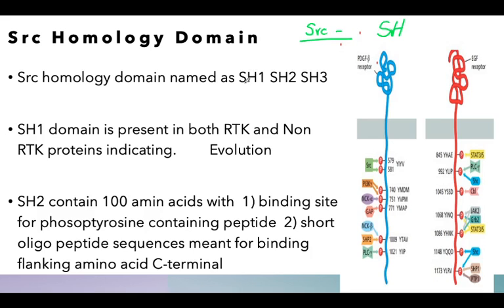Based on the similarity of Src homology domains SH1, SH2, SH3, and SH4 — these are slightly overlapping components — these overlapping components came together to recognize that there is an SH component on a counterpart receptor that has been activated, so they bind with that counterpart and transmit the signals. SH1 domain is present in both receptor tyrosine kinase and non-receptor tyrosine kinase proteins, indicating an evolutionary process.